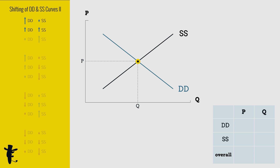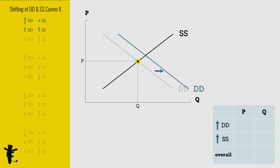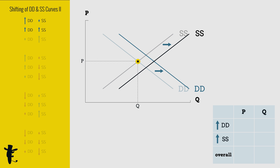What happens when the increase in demand and supply is the same? Demand shifts right, supply shifts right, in the same way. Overall, quantity increases — that's obvious. No change in price.